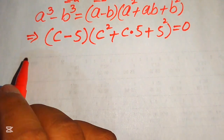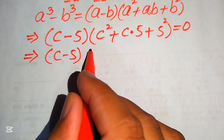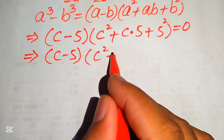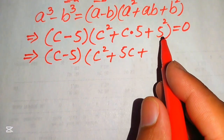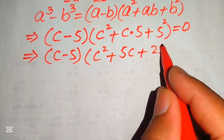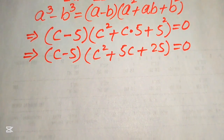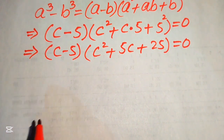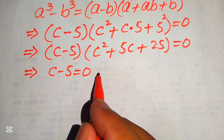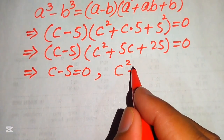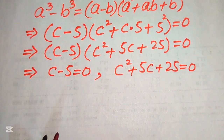After simplification it is written as (c minus 5) times (c squared plus 5c plus 25) equals to 0. Now we divide this equation into two cases: the first case is c minus 5 equals to 0, and the second case is c squared plus 5c plus 25 equals to 0.